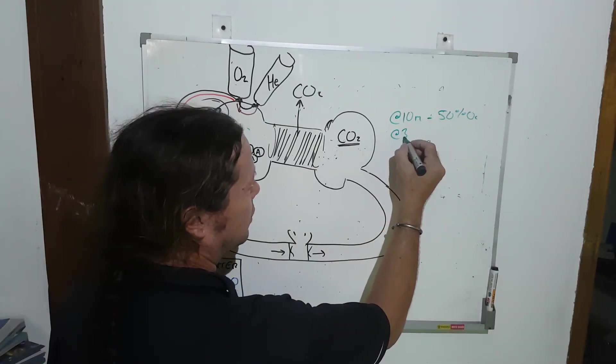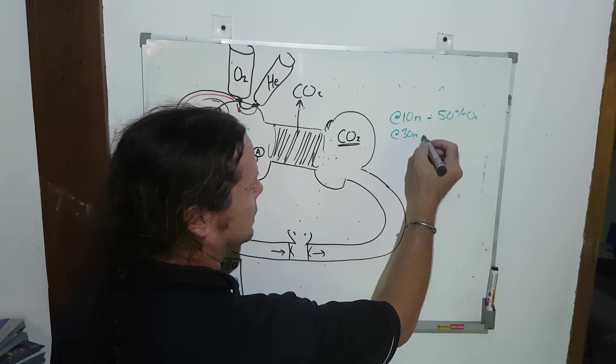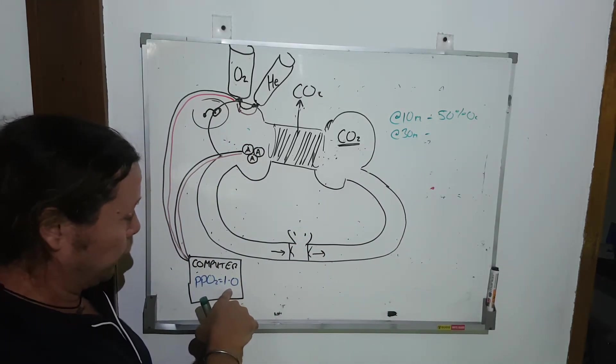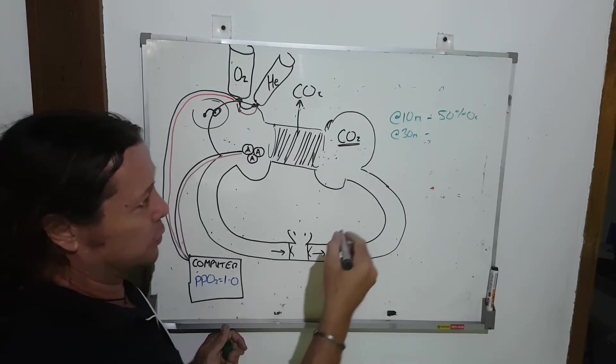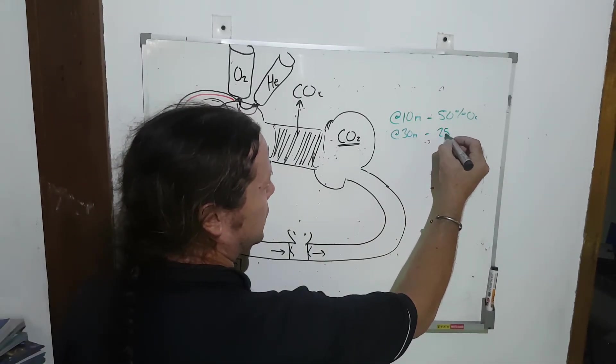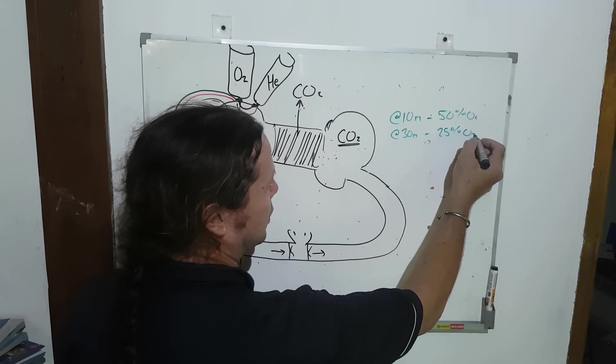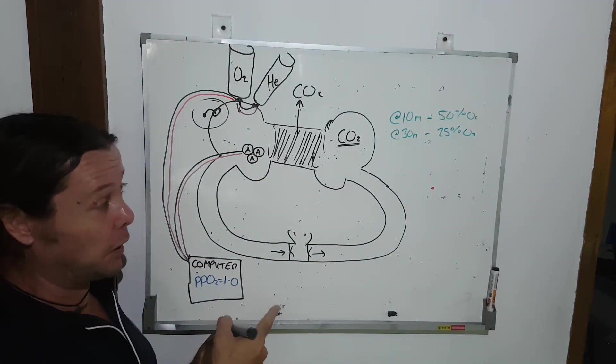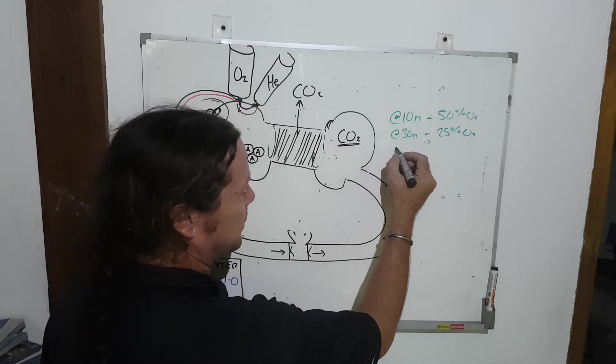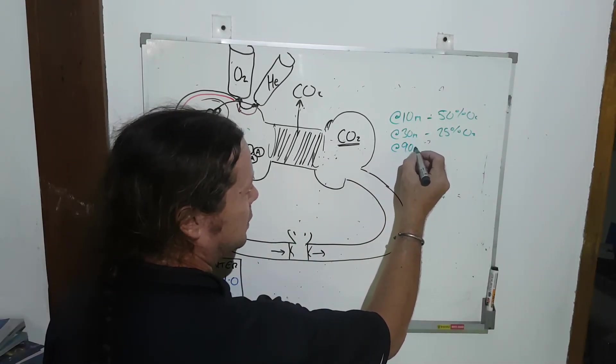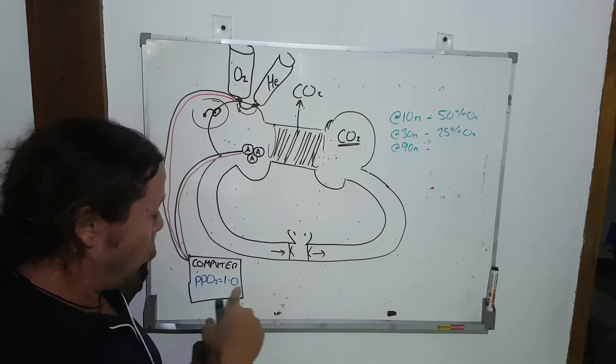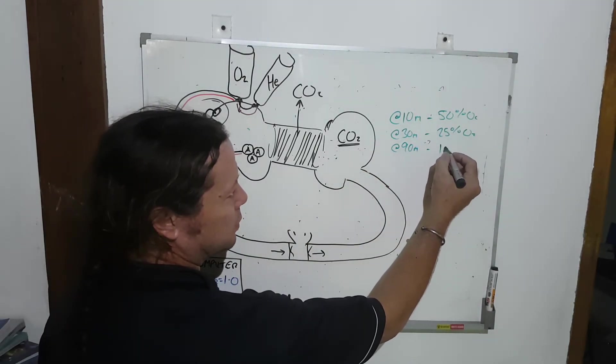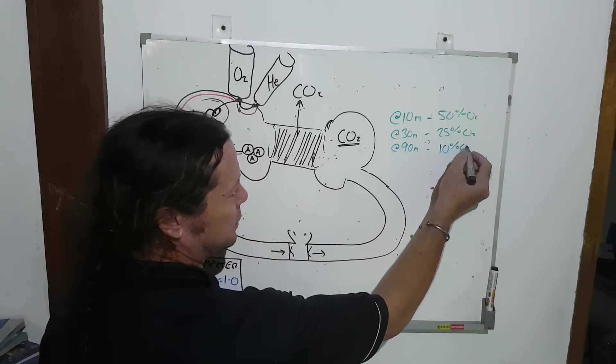If I go to 30 meters, now as you know that's four atmospheres, one of those four needs to be oxygen. So it's going to be 25% oxygen on this particular rebreather. If I go to 90 meters, my rebreather, one atmosphere out of the 10 must be oxygen. 10% oxygen.